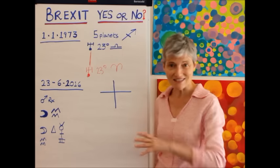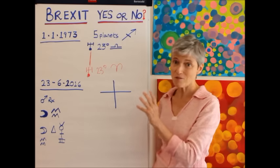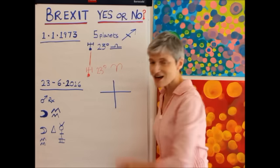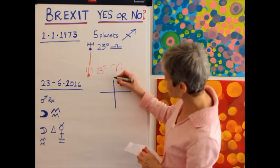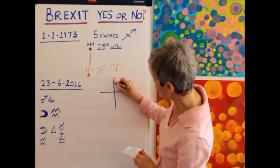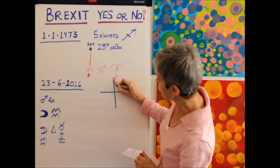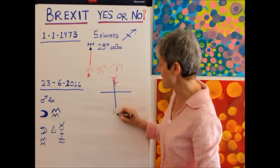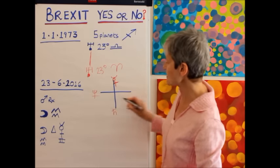Now let's look at the date of the polls. We're still under this mutable cross, with Mercury being very much the feature, the trigger planet of the mutable cross with Saturn, Neptune and Jupiter.